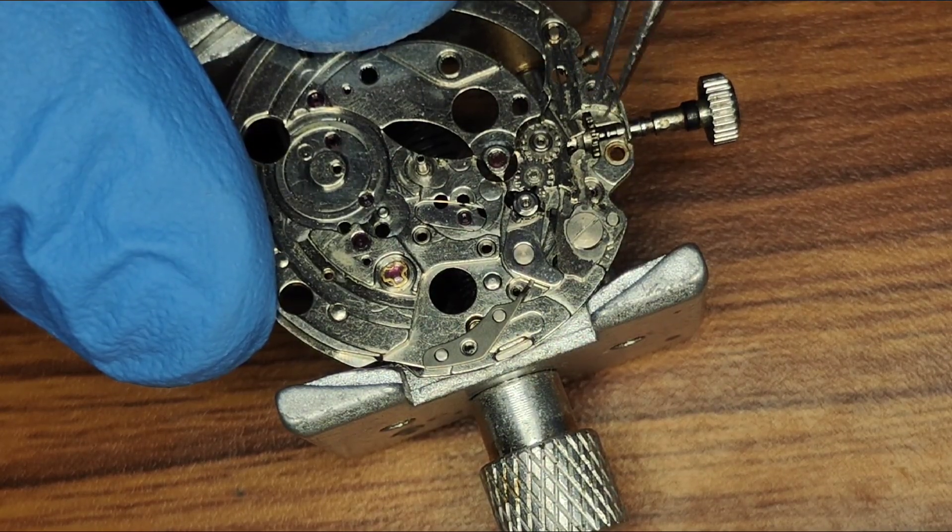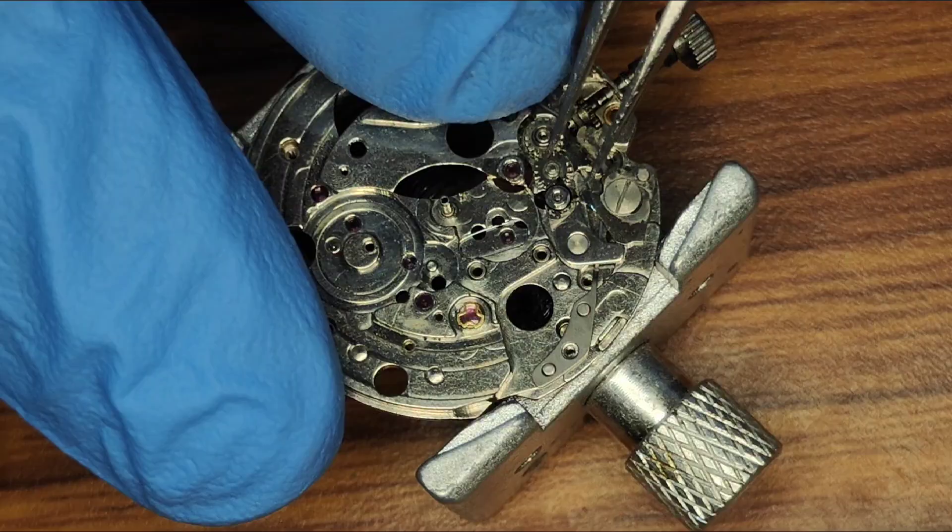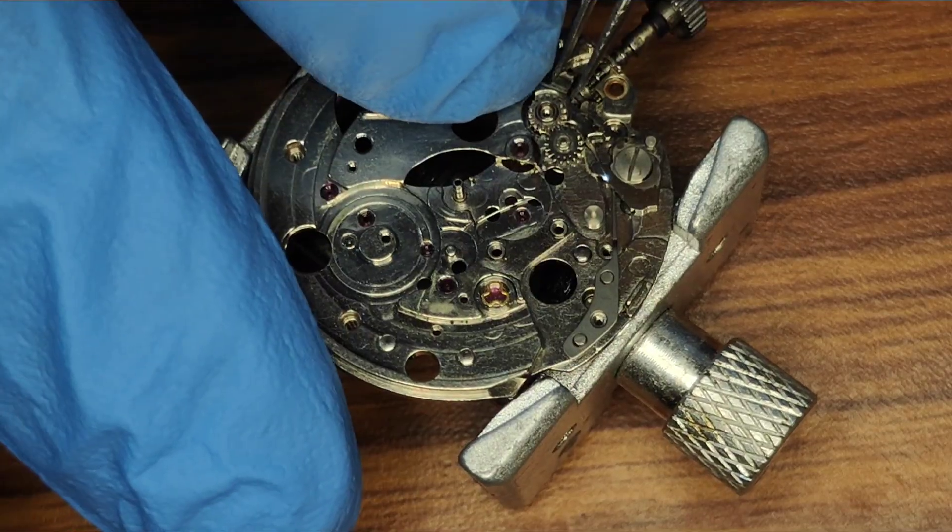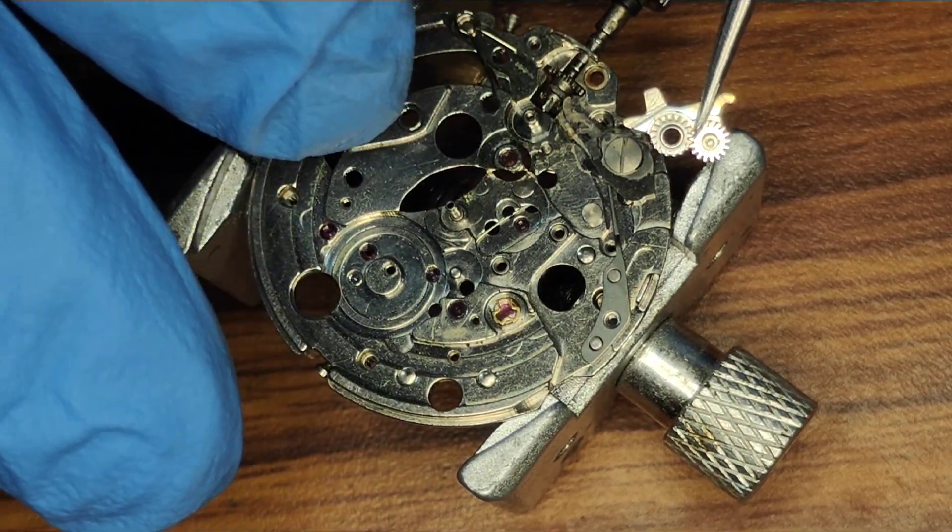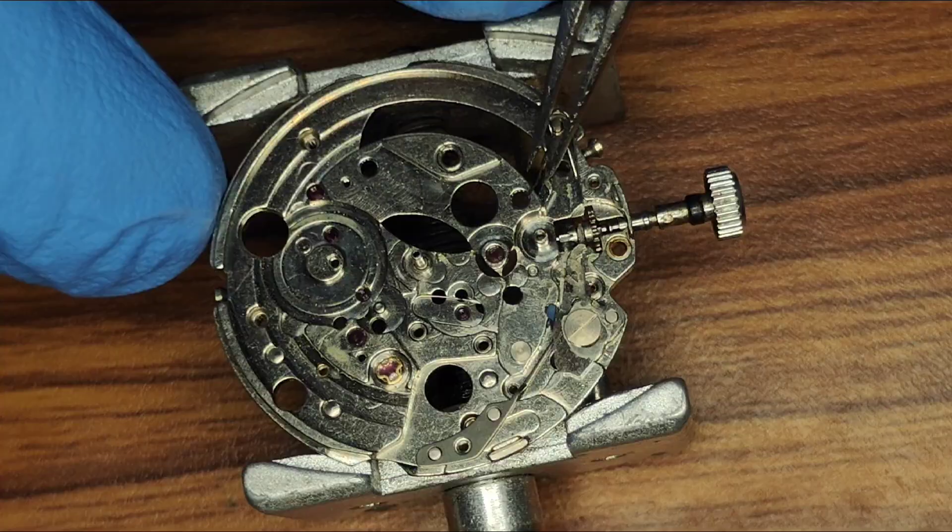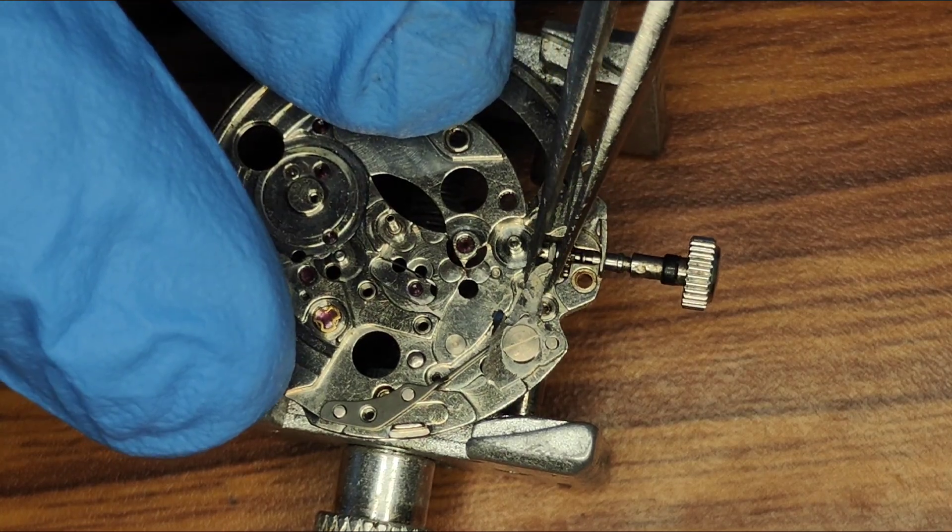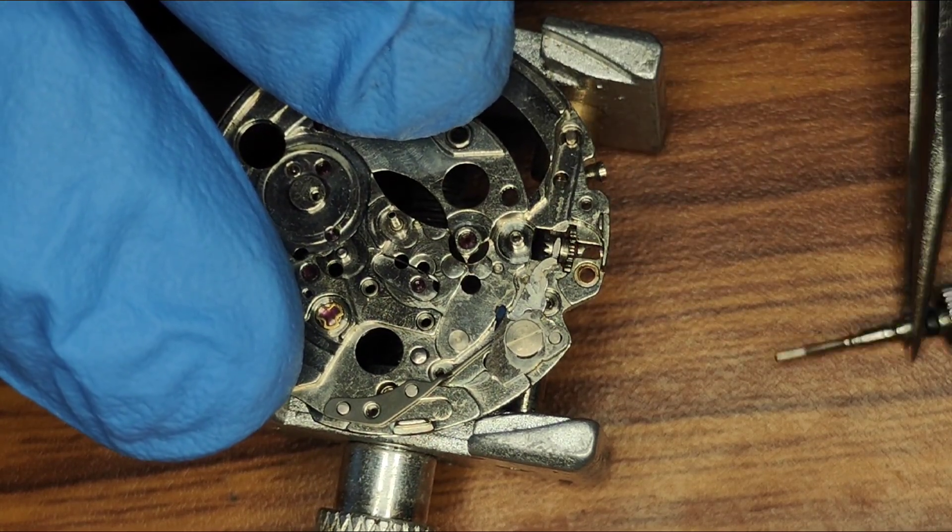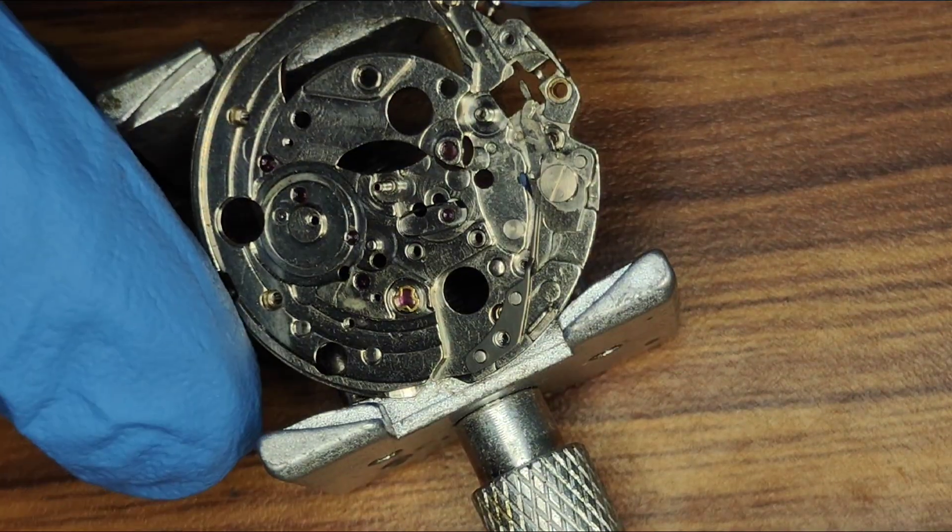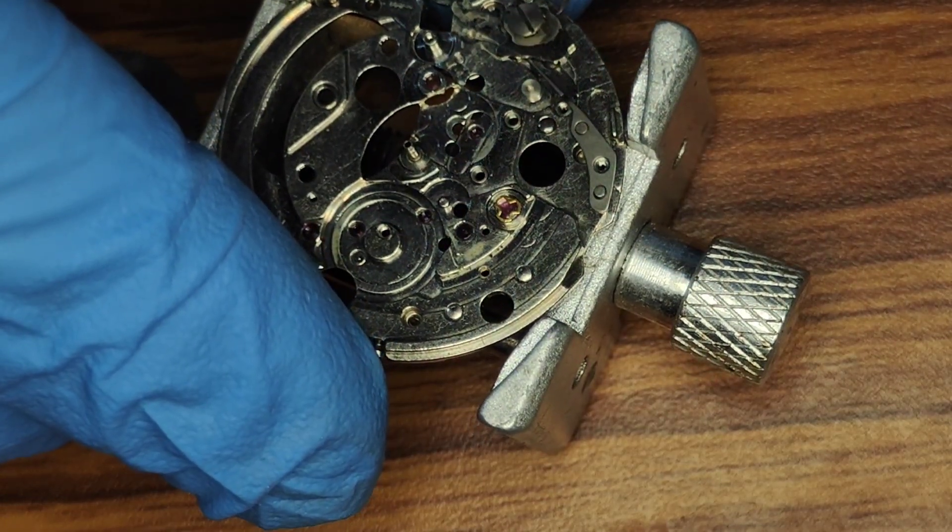Setting lever. This part is called setting wheel lever complete. And there will be a spring for it. This is clutch wheel and winding pinion. And this part is called day and date character wheel rocking lever.